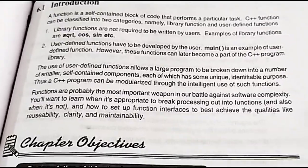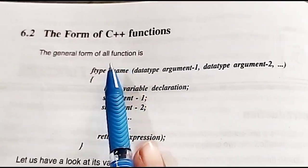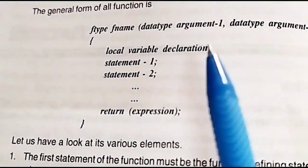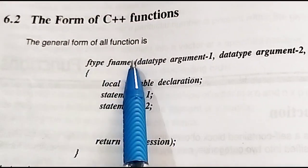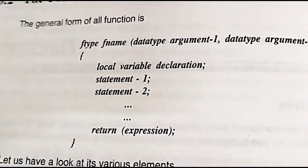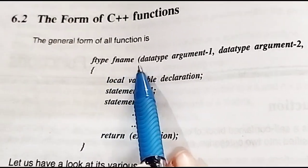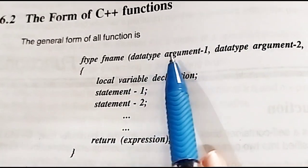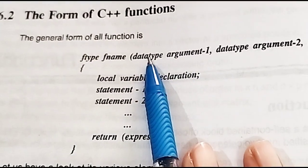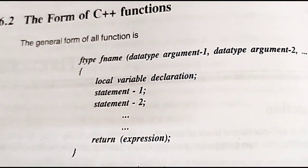Using functions also reduces complexity. When we write a function definition, we define the data type, which is the return value type, then the function name, and then the data types of the arguments.